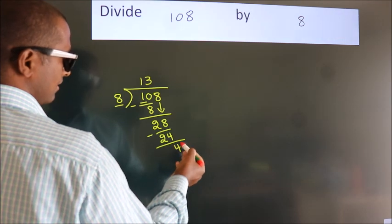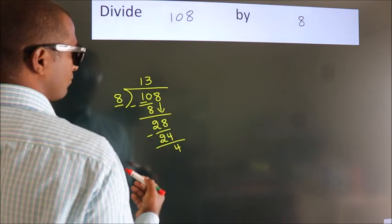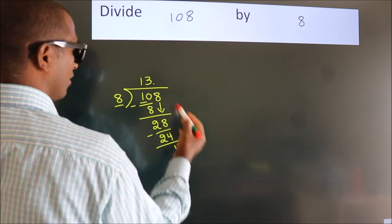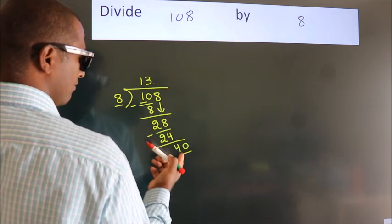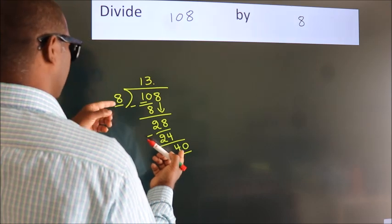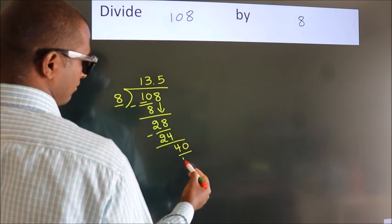After this, no more numbers to bring it down. So what we do is we put a dot, take 0. So 40. When do we get 40 in the 8 table? 8 fives 40.